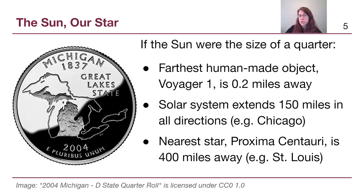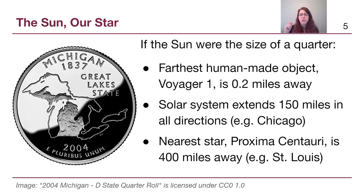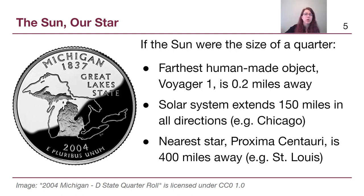We can come up with a small scale model that helps us think about these sizes in a way that has meaning to us. Let's say that the sun were the size of a quarter. The farthest human-made object, Voyager 1, was launched back in the 1970s and has been traveling outward from Earth since then. In our scale model, it would be just 0.2 miles away — a couple of city blocks down the road.